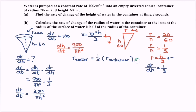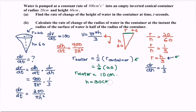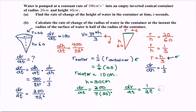The radius of the container is 20 cm, so the radius of the surface of the water is (1/2) × 20 = 10 cm. Since r = h/3, substituting r = 10 gives h = 30 cm. Finally, dr/dt = 300 / (π × 30²) = 300 / (900π) = 1/(3π) cm s⁻¹.